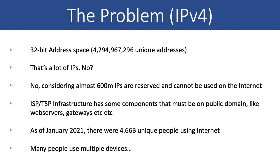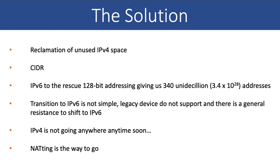So to overcome this problem of IPv4, there have been multiple solutions that have been proposed, and many of them are in action also. One of the first was to reclaim any unused IPv4 space. IPv4 is allocated by an RIR, that is your Regional Internet Registry. RIRs had allocated a lot of IPv4s to many people over the years, but not all of them had been used. So when IPv4 was getting exhausted, what RIRs started to do was reclaim any unused IPv4 space from defunct organizations and reallocate it to other companies.